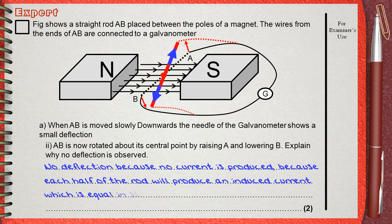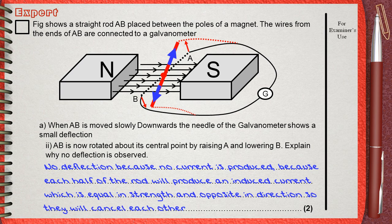because each half of the rod will produce an induced current which is equal in strength and opposite in direction, so they will cancel each other.